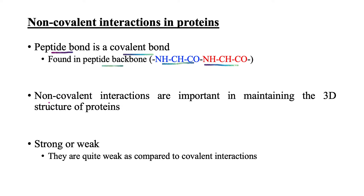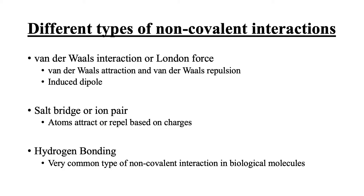Now, we have non-covalent interactions in a protein molecule that are very important in maintaining the three-dimensional structures of proteins. These non-covalent interactions may either be strong or weak; however, they are quite weak as compared to covalent interactions. The different types of non-covalent interactions we will discuss include Van der Waals interaction, or London force.